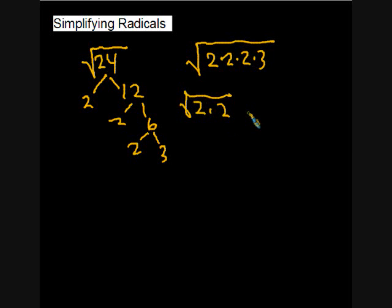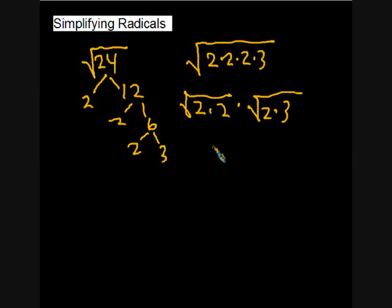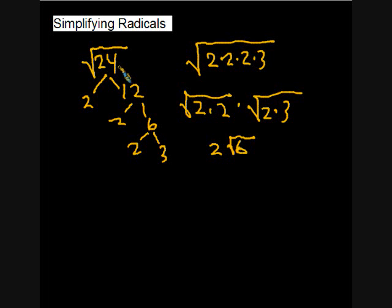We break this apart using the product property: square root of two times two, times square root of two times three. Square root of two times two becomes two, just like square root of three times three became three. Over here we have square root of six — two different factors, so we can't simplify that radical further. So the simplified form is two times the square root of six. You can verify this on a calculator by comparing the decimal values.